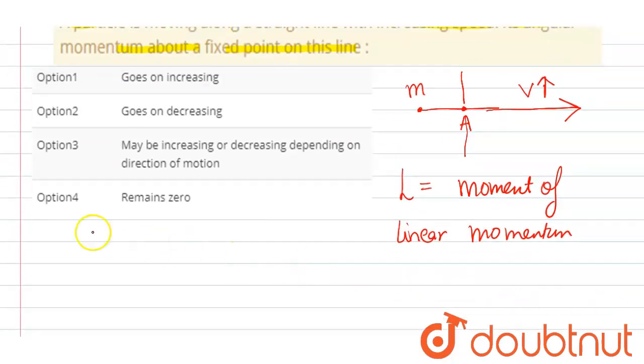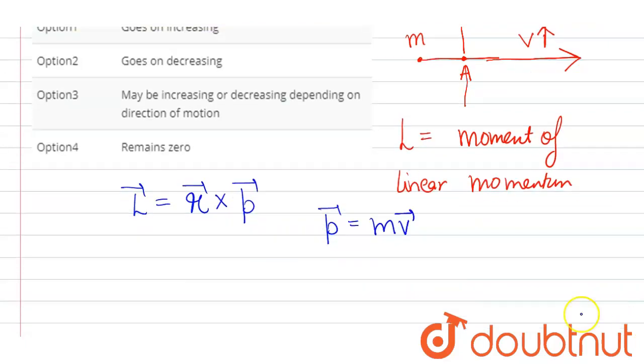Now we know the formula for L can be written as L equals r cross p. Now we know the formula for p equals mv. So we easily apply here and we get L vector equals r cross mv vector.